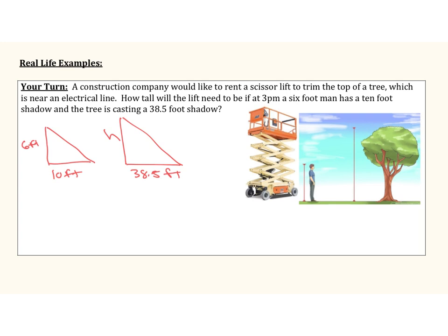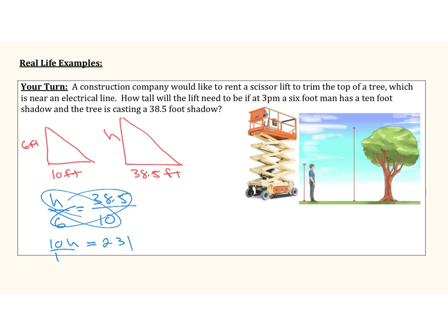I've drawn two triangles to represent our scenario: the six-foot-tall man with a 10-foot shadow, and the tree with a 38.5-foot shadow. Conveniently, all units are the same so no conversion is needed. Setting up the ratio: height of tree over height of man equals shadow of tree over shadow of man. Cross-multiplying gives 10H equals 231. Dividing by 10, the height of the lift is 23.1 feet. That does it for our notes — go ahead and start the homework, good luck.